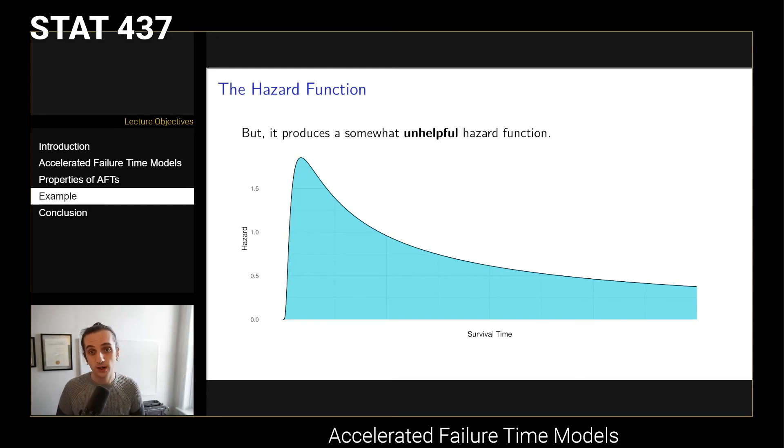At first the hazard function is increasing and then it decreases afterwards. It's saying that the probability of instantaneous failure starts off down at zero, but then it increases rapidly and then it decreases over time. Normally we think about hazard functions as being monotone. We don't normally think about there being a change point in them. The log normal is not really necessarily the best accelerated failure time model.